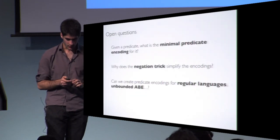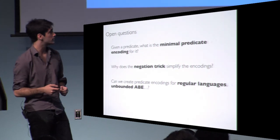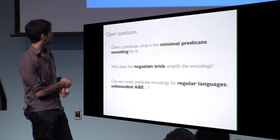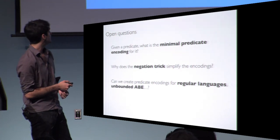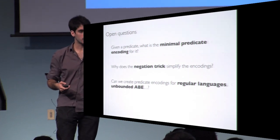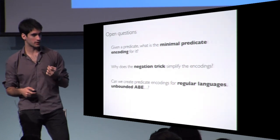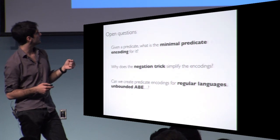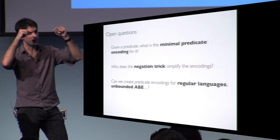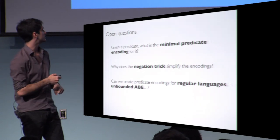I want to finish with some open questions. Given a predicate, what is the minimal predicate encoding you can build for it? Can we build predicate encodings for regular languages or unbounded ABE — which can be achieved in the pair encodings framework but I am not sure about predicate encodings? And a very interesting question: why does the negation trick work? We managed to improve an existing encoding by negating and simplifying, and this works not only for Boolean formulas but also for arithmetic span programs. Interestingly, negating twice always returns to the original encoding, so I would really like to understand why negating simplifies.